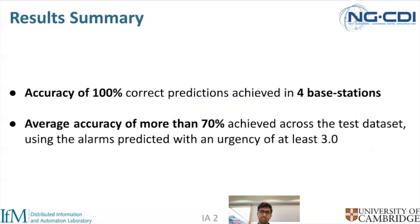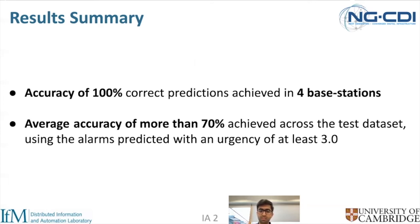In summary, out of the fleet, we achieved an accuracy of 100% in four base stations — meaning the alarms predicted actually corresponded to the alarms that happened. An overall average accuracy of more than 70% was achieved across the entire test dataset. This accuracy was calculated for alarms predicted with an urgency of at least three.